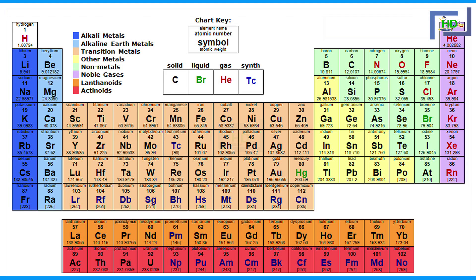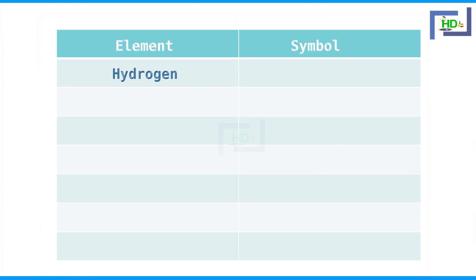Each element has a unique symbol assigned to it. The symbol of an element is not used for any other element. For example, hydrogen — instead of writing hydrogen, we can represent the hydrogen element using the symbol capital H. In chemical equations, when we write capital H, it means the element hydrogen.